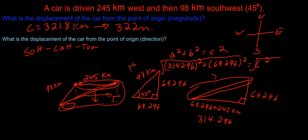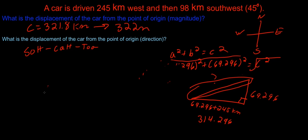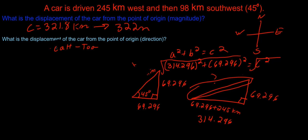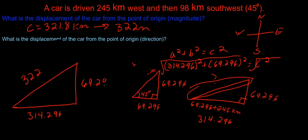Now let me erase all of this junk to give us a lot more room because we now need to find the angle from the point of the origin. So this is 322, this is 314.296, and this is 69.296, obviously not drawn to scale.